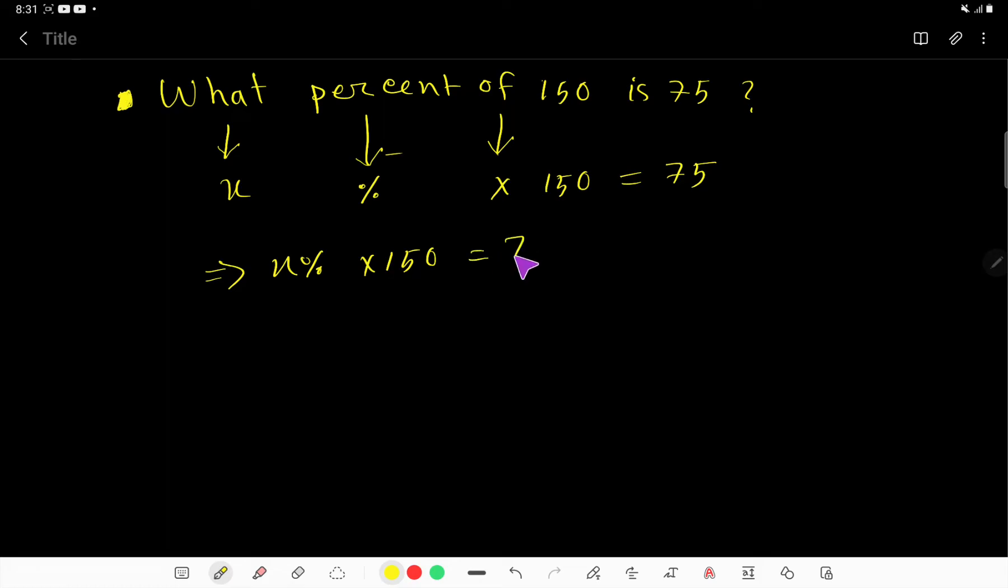You know that percent means 1 over 100, so x times 1 over 100 times 150 equal to 75. Now solve this equation. You can cancel this zero, this zero, so you are getting here x divided by 10 times 15 equal to 75.